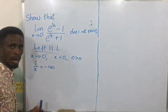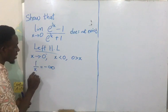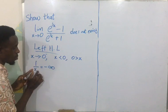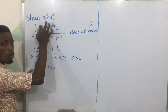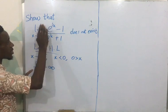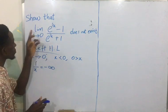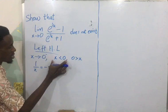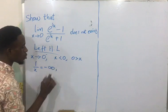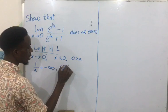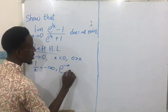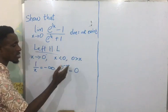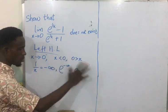Since x is less than 0, x is a negative number, so 1 over x gives a negative number — that is minus infinity. When taking the limit, 1 over 0 is infinity, and because it is negative we get negative infinity. Also, e to the power of negative infinity is equal to 0.